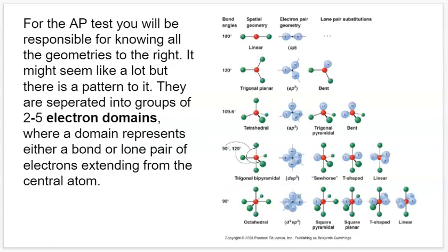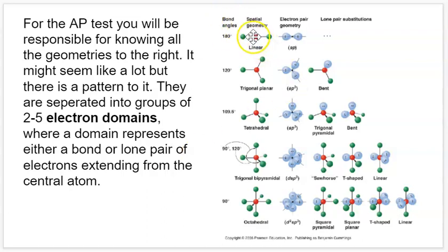For the AP test, this chart is something you'll want to get into your brain. There's a definite pattern: the base geometries involve two to six electron domains — either bonds or lone pairs. Linear has two electron domains, trigonal planar has three, tetrahedral has four, trigonal bipyramidal has five, and octahedral has six.